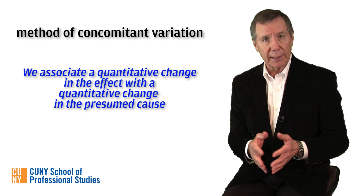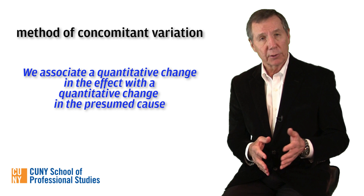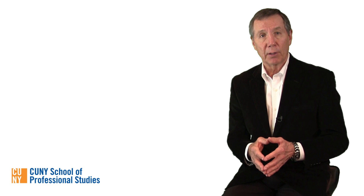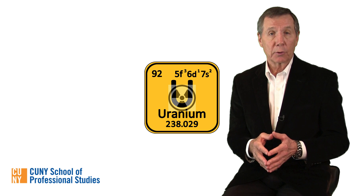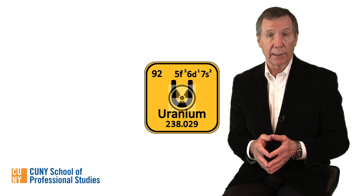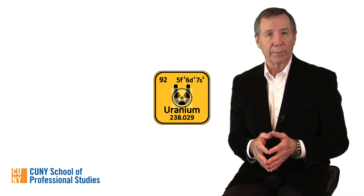Mill's first four methods examine cause and effect in qualitative terms—an effect either occurs or does not occur, and a probable cause either is present or is absent. However, in Mill's fifth method, the method of concomitant variation, quantitative considerations come into play, since we associate a quantitative change in the effect with a quantitative change in the presumed cause. Here's an example: suppose that various samples of soil, each containing both iron and uranium, were found to be radioactive. If the level of radioactivity varied in tandem with the level of uranium, one could attribute the radioactivity to the presence of uranium. An increase or decrease in one would always accompany an increase or decrease in the other, so one is probably the cause of the other.